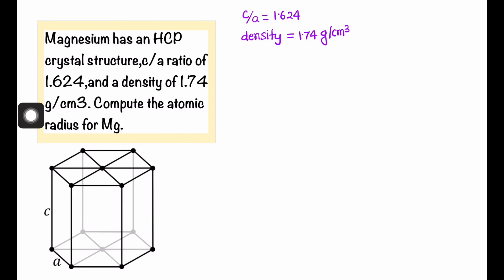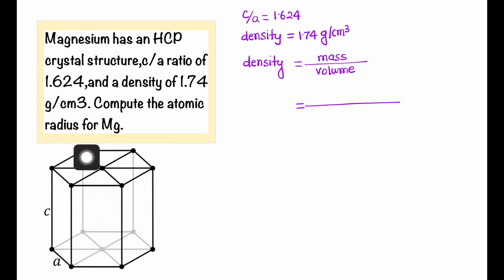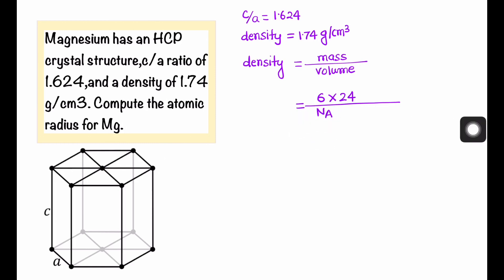Density is simply mass divided by volume. In the unit cell, the mass comes from the effective number of atoms. In an HCP crystal system, the effective number of atoms per unit cell is 6. The atomic mass of magnesium is 24 amu, so the mass of 6 magnesium atoms is 6 × 24 amu. To convert amu to grams, we divide by Avogadro's number, 6.022 × 10²³, multiplied by the volume of the unit cell.